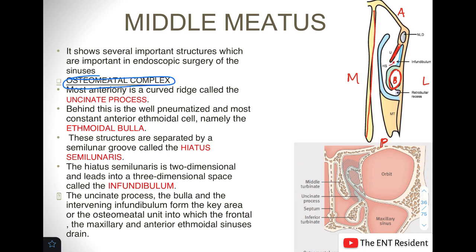Between the uncinate process and the bulla ethmoidalis there is a semilunar groove called the hiatus semilunaris, as you can see in the picture. The hiatus semilunaris is a two-dimensional structure, and when this hiatus leads into a three-dimensional space, that space is known as the infundibulum. So: the uncinate process, the bulla, the intervening hiatus semilunaris, and the infundibulum together form the key area known as the ostiomeatal complex.